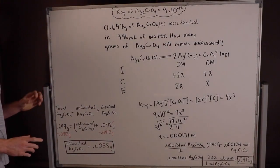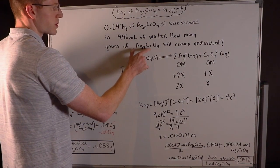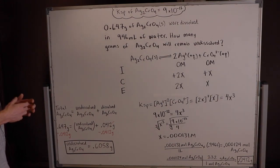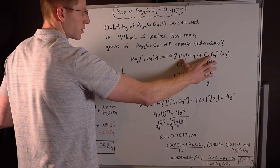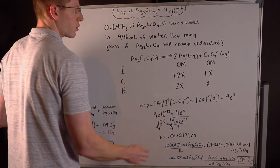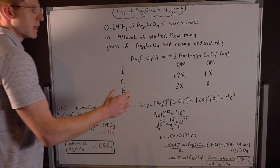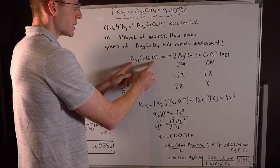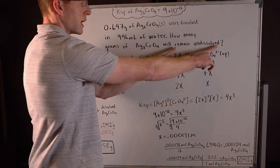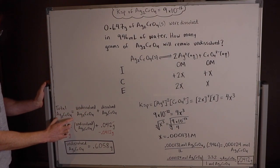In this last problem, 0.647 grams of silver chromate Ag₂CrO₄ solid were dissolved in 946 milliliters of water. How many grams of silver chromate will remain undissolved? This is a KSP solubility problem where we assume it reaches equilibrium. The key equation to keep in mind is: total silver chromate equals undissolved silver chromate plus dissolved silver chromate. The ICE table will tell us how much dissolved, and since we know the total, we can subtract to find the undissolved amount.